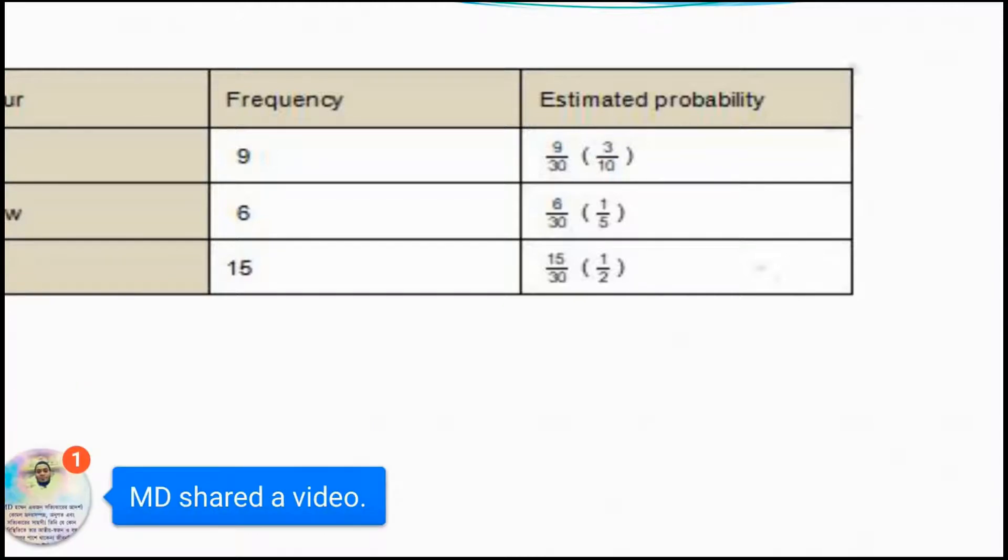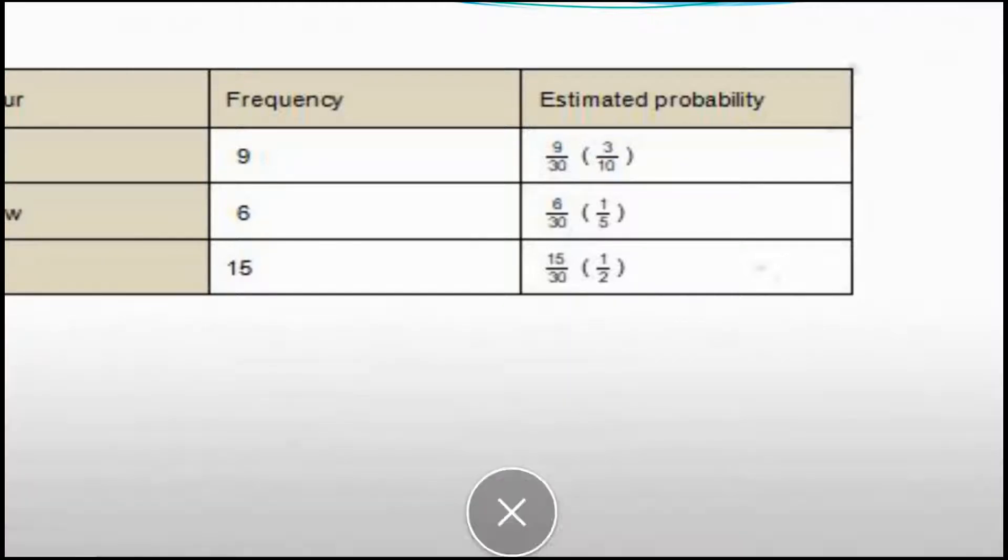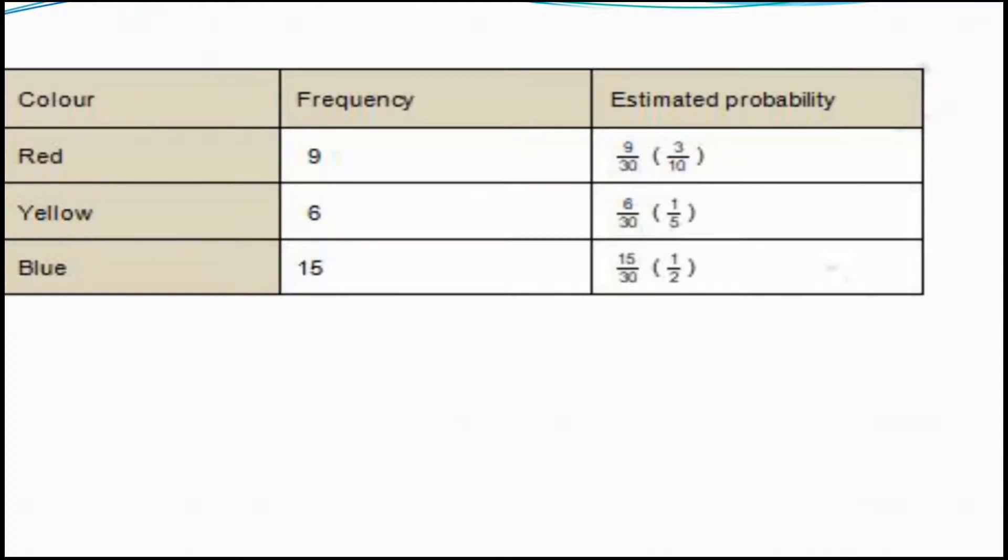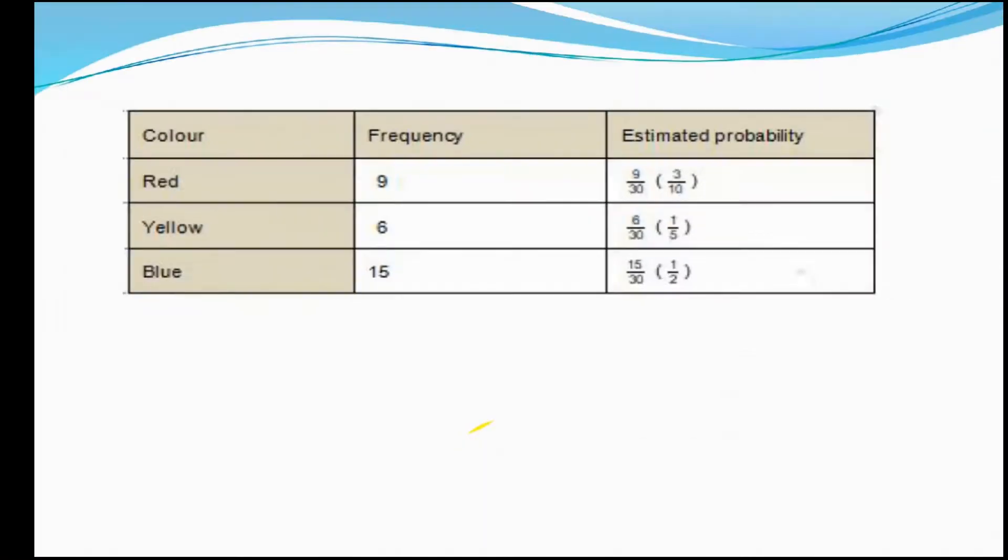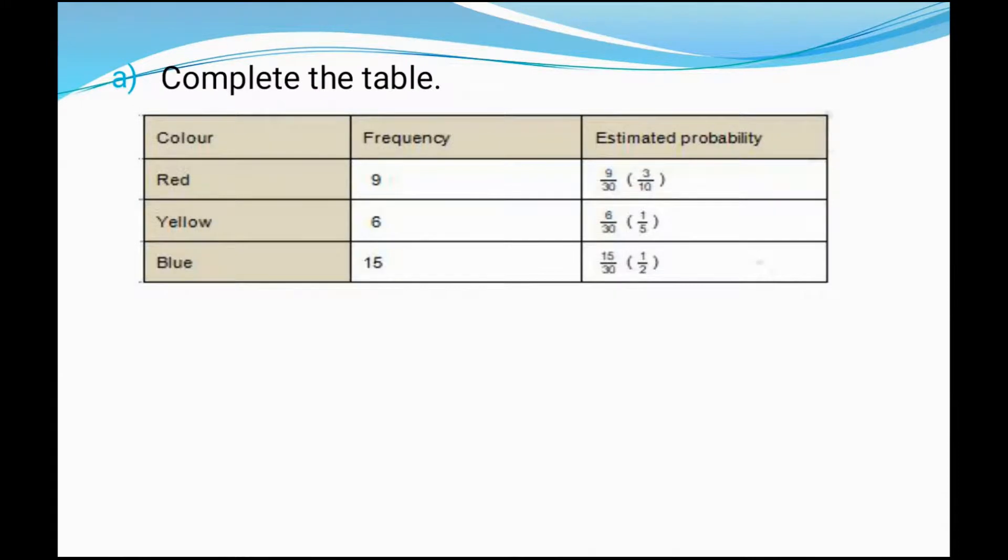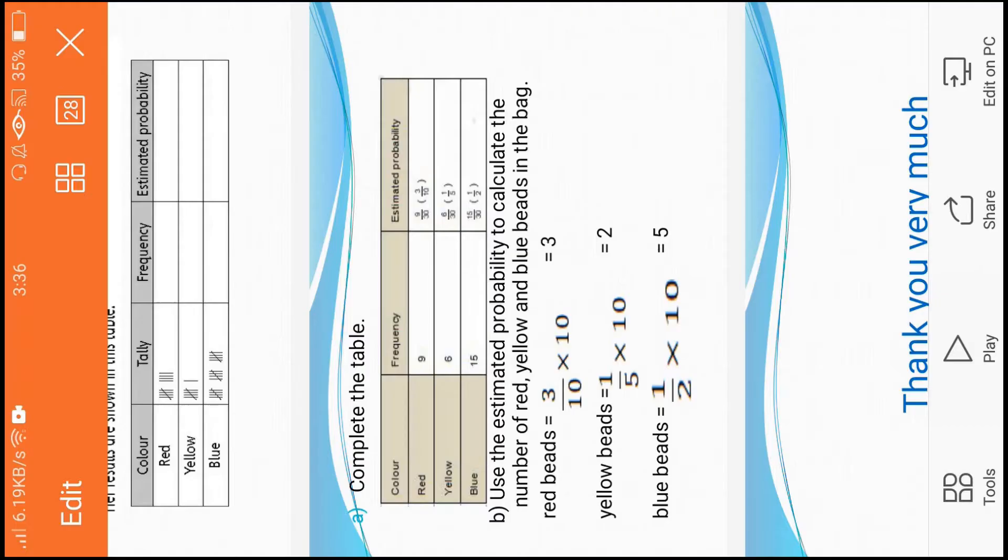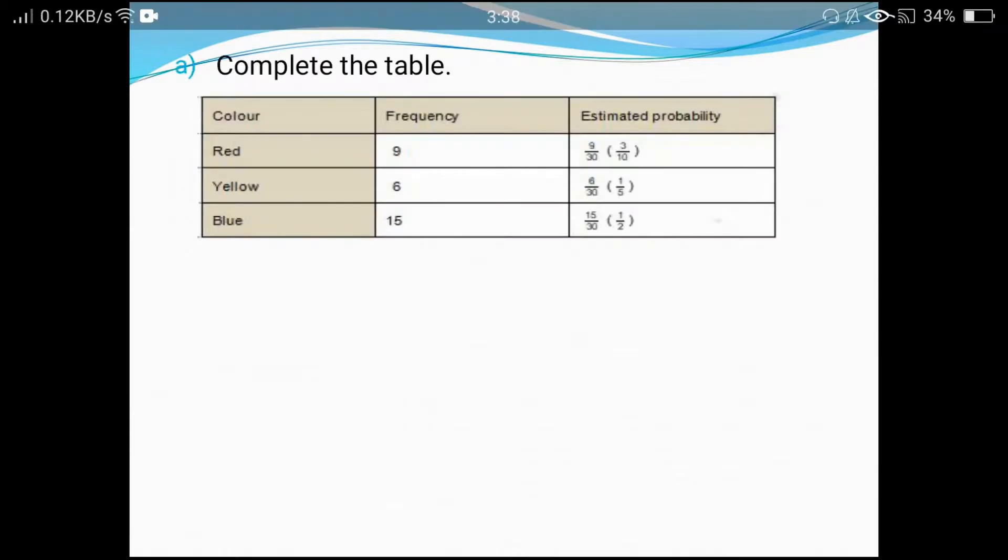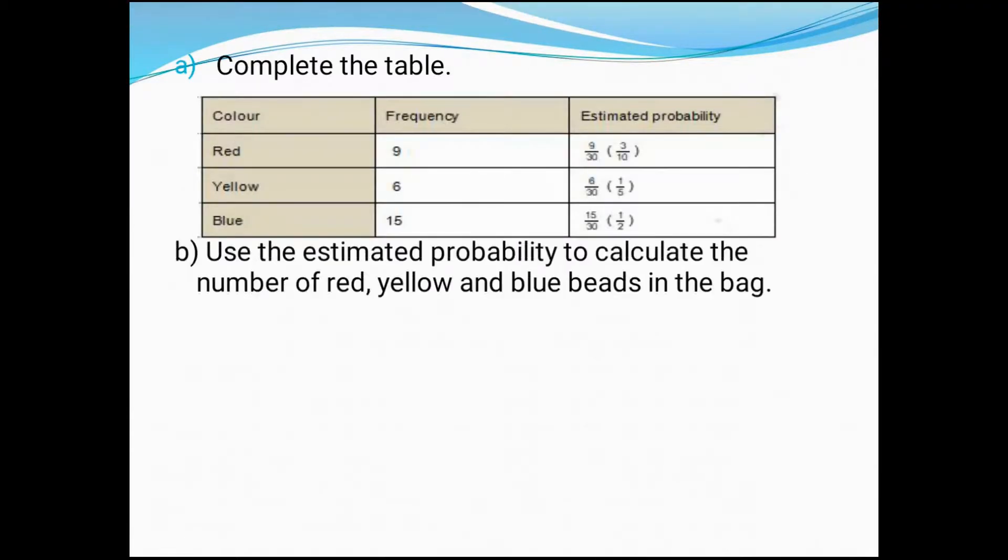And the third one: we can tell the blue color is fifteen by thirty. Fifteen ones are fifteen, fifteen twos are thirty, so we got the fraction one by two. So this is my answer for estimated probability. Remember that estimated probability will be that.